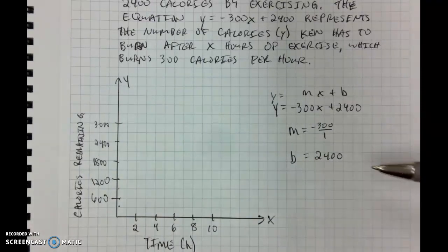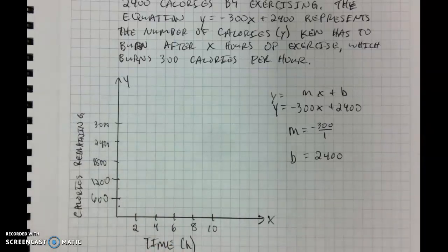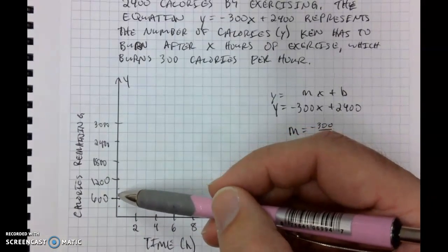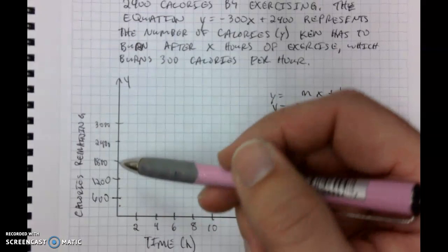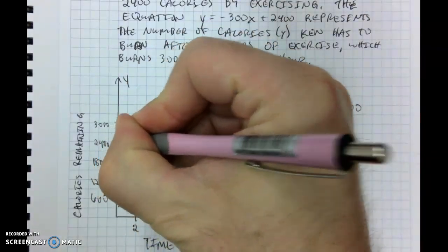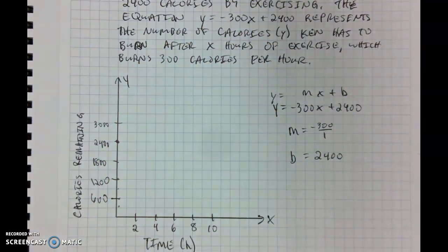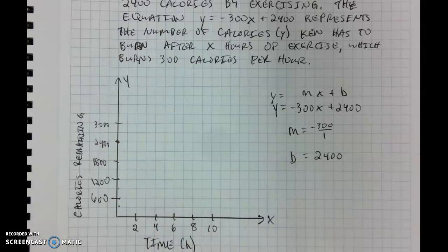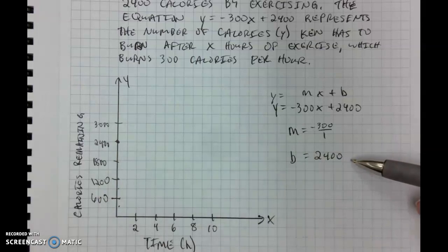Our first ordered pair, our first point, goes at our y-intercept, which is 2,400. We're not counting up 2,400 lines — that would take too long. Instead, we count based on the grid lines, so when we count up 2,400 units, we're going up to that grid line on our graph. We have our grid line at 2,400, so that's where our first point goes.